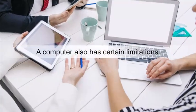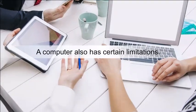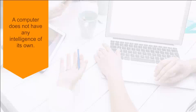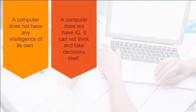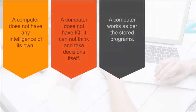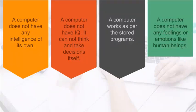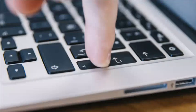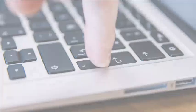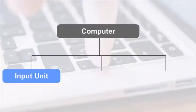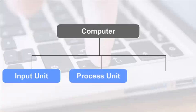A computer also has certain limitations. A computer does not have any intelligence of its own — it cannot think and take decisions itself; it works as per stored programs. A computer does not have any feelings or emotions like human beings. A computer system consists of three main components: Input unit, Processing unit, and Output unit.